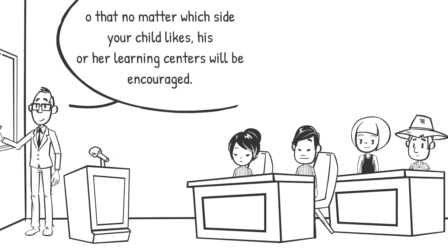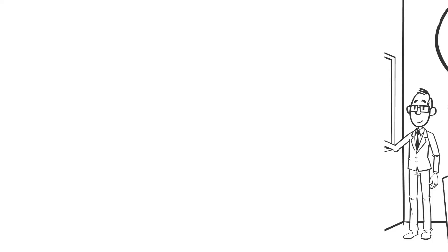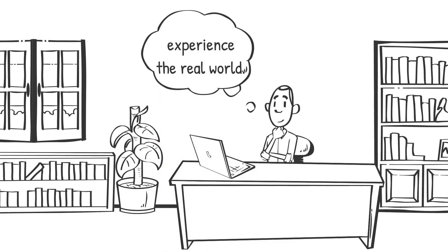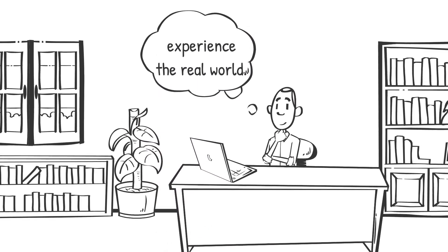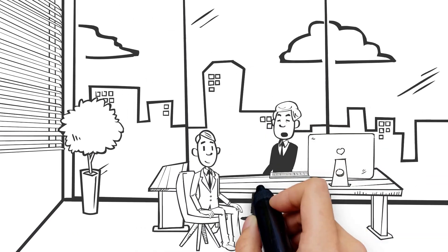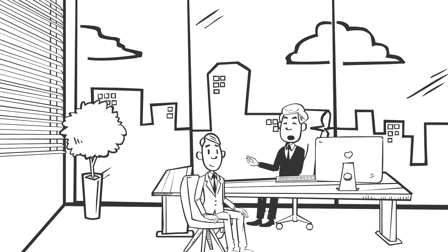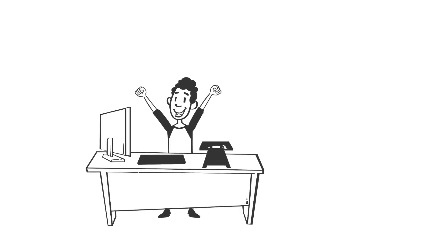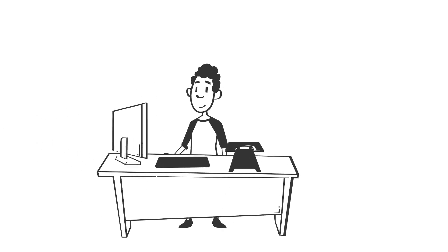The third learning window, professional learning, is where young adults begin to experience the real world. As they grow older, they will use the lessons they learned from childhood. At this point, we decide whether we have chosen the right path for a job. How do you choose the right job? Is there a way to help your children choose the right path?